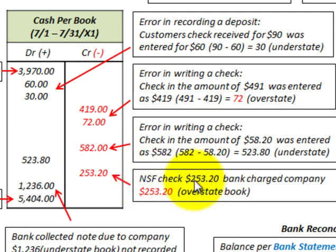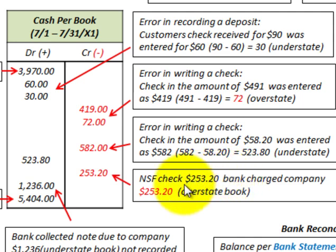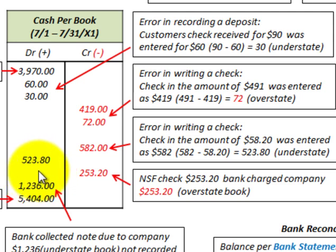Now an NSF check for $253.20: the bank charged the company this amount because the bank couldn't collect on the check. The company had originally recorded this as $253.20 — it would have been debited when received — but now that the bank couldn't collect on it, we need to remove it from the cash account by crediting cash for $253.20.